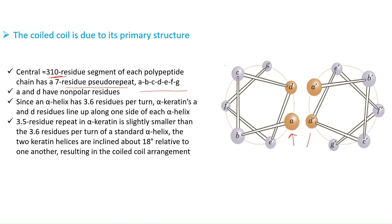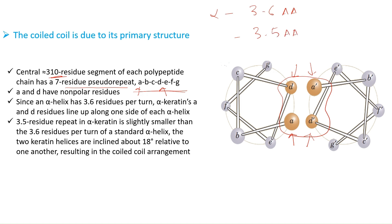In the coiled-coil arrangement, the amino acid at position 'a' of one alpha helix faces the amino acid at position 'd' of the second alpha helix, and vice versa. Therefore, it is important that positions 'a' and 'd' contain hydrophobic amino acids so they can interlock and stabilize the structure. In this seven-residue pseudo-repeat — a, b, c, d, e, f, g — the amino acid at the first and fourth positions is always hydrophobic.